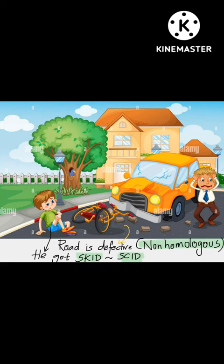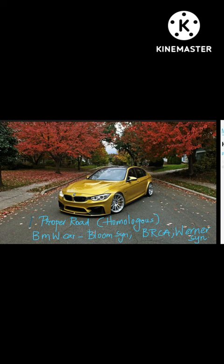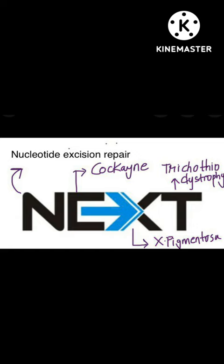The second image shows a proper road — a homologous road — with a BMW car parked there. This represents Bloom syndrome, Burkitt's, and Werner syndrome — remember it as B, W.